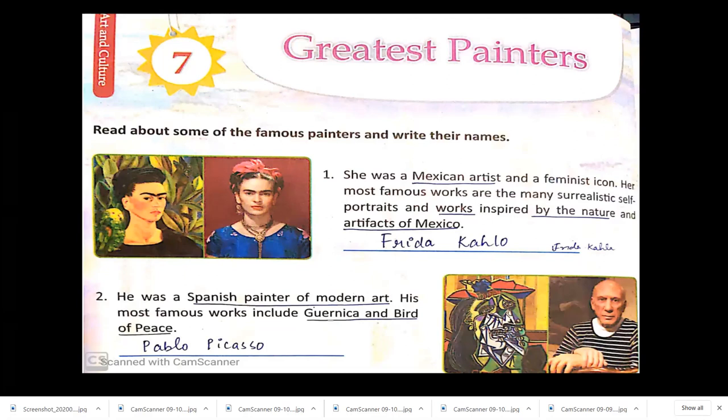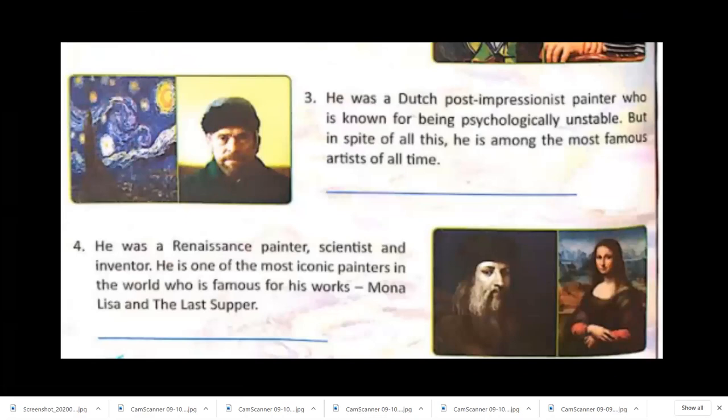The next is a Spanish painter of modern art whose most famous works include Guernica and Dove of Peace — the painter is Pablo Picasso. The next one is a Dutch painter, known for being psychologically unstable, yet his artwork was among the most famous of all time. His name is Vincent van Gogh.